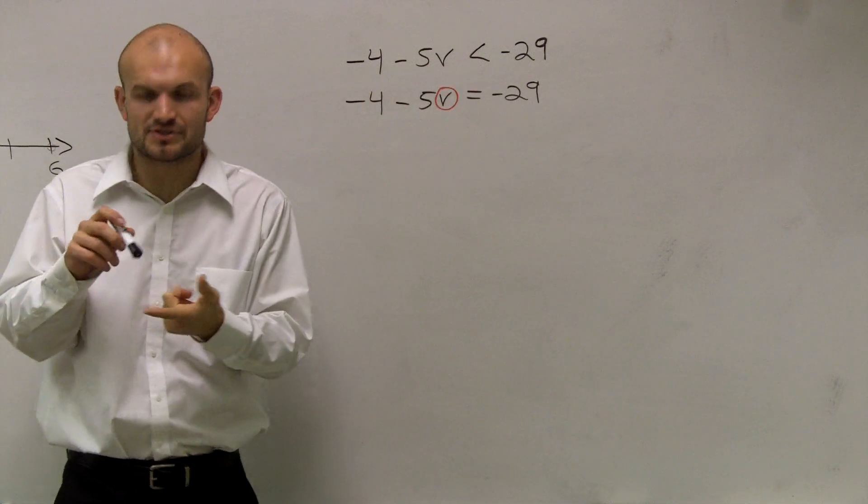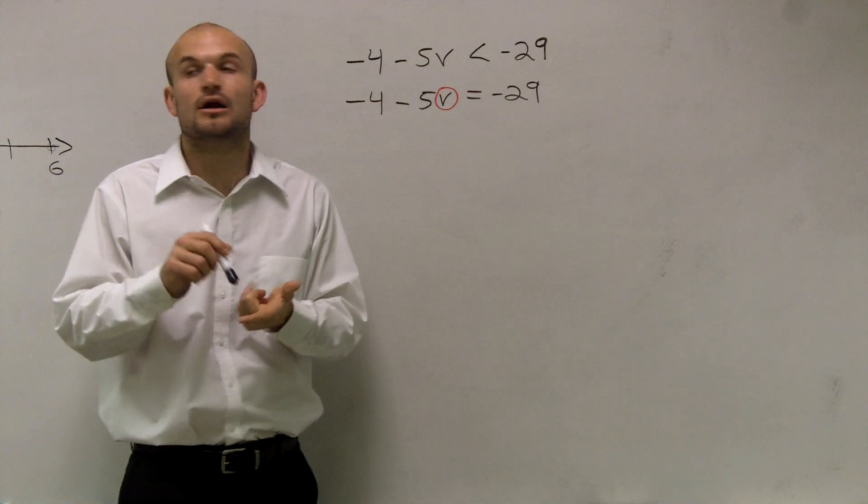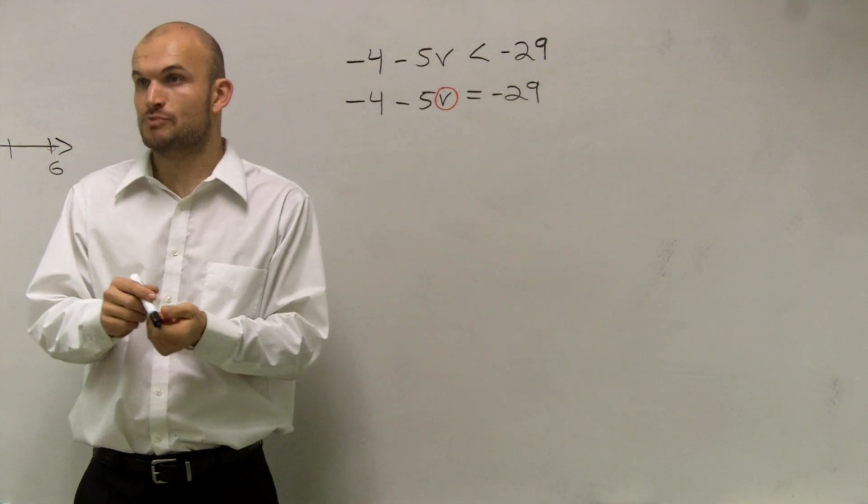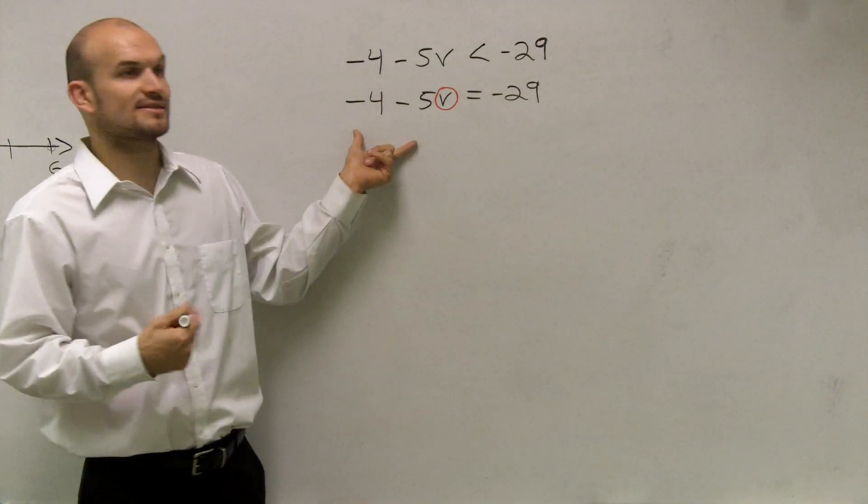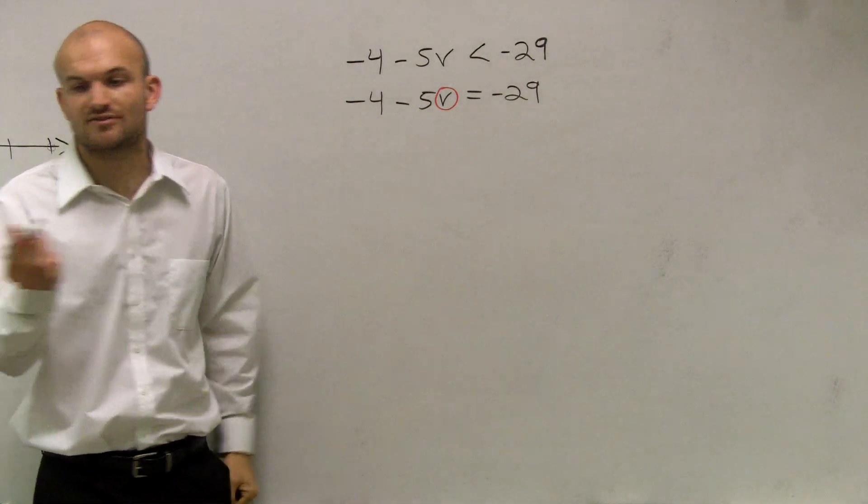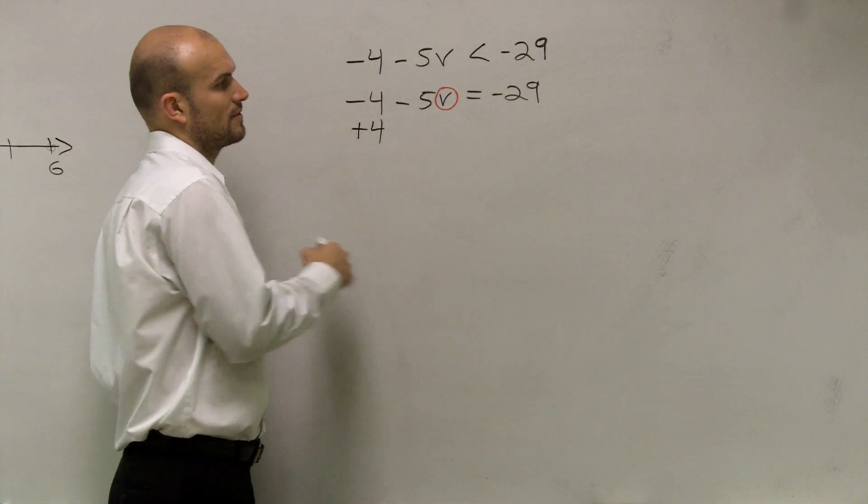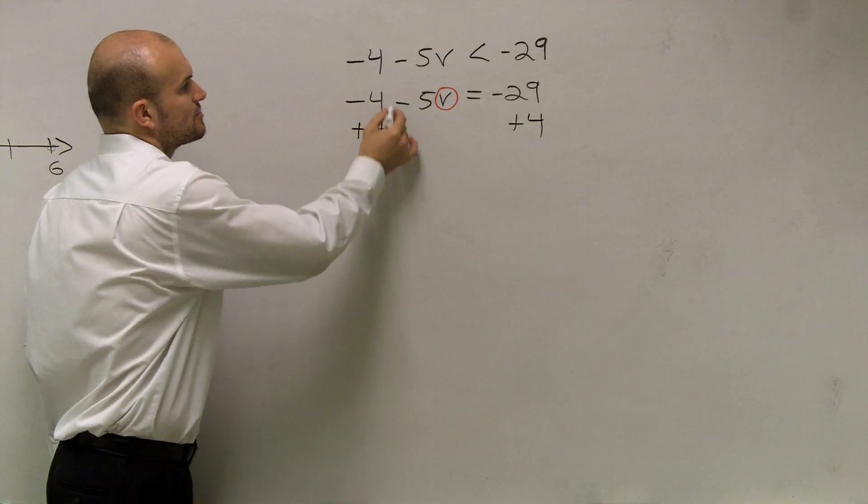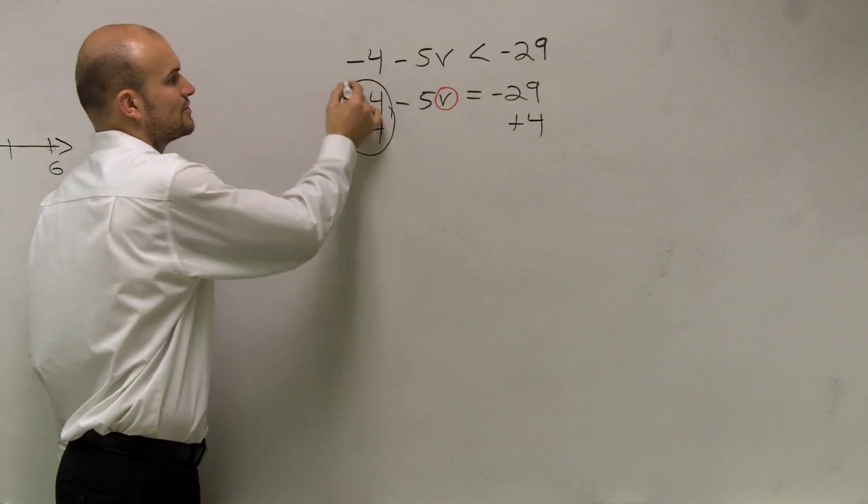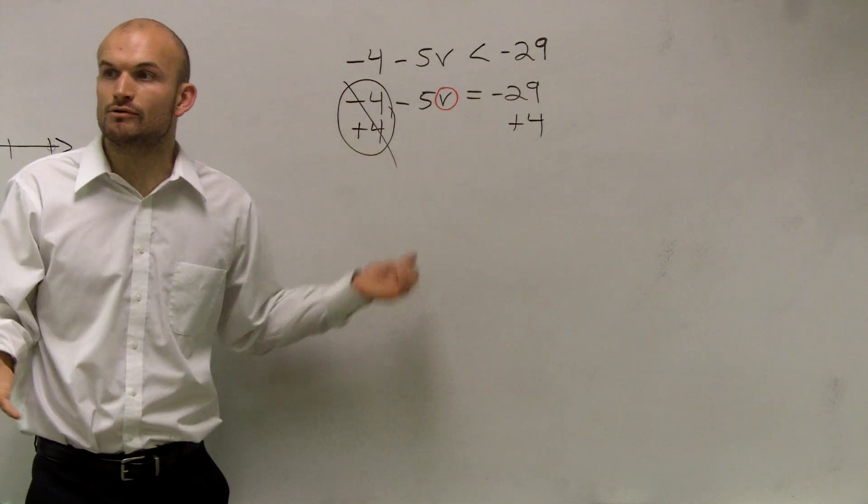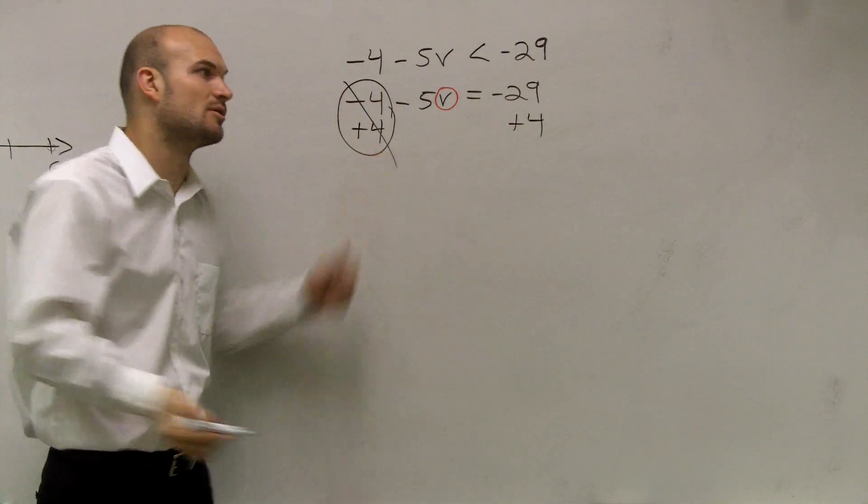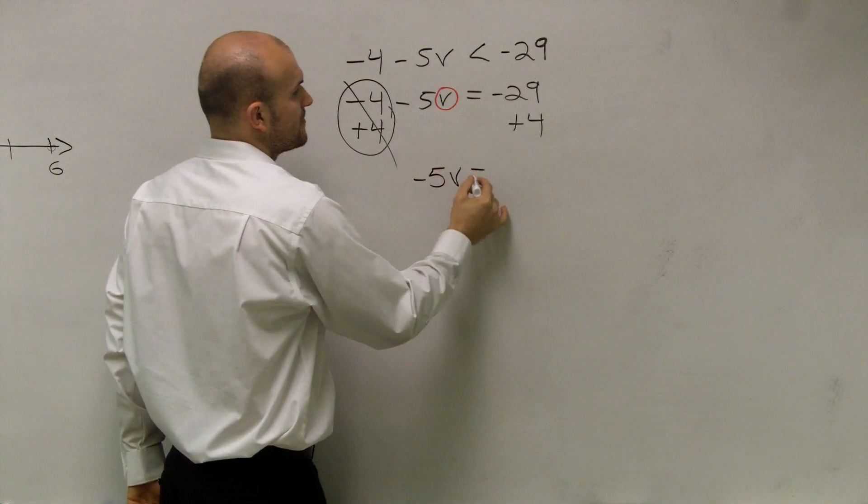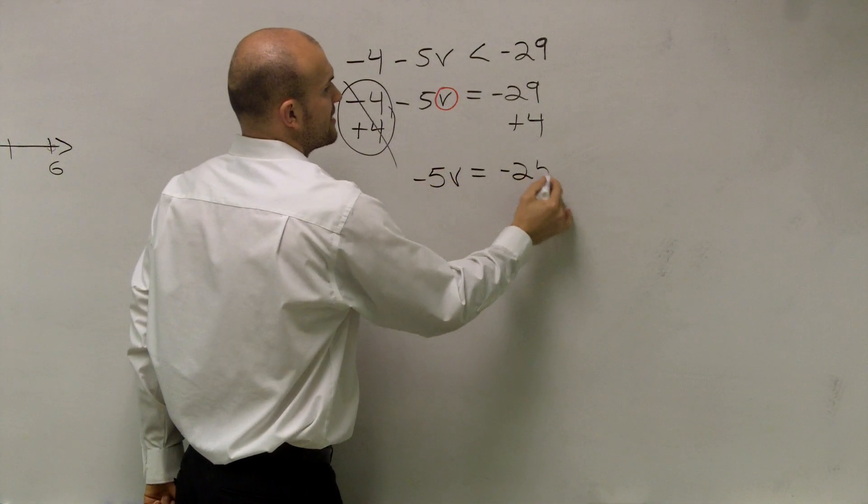So the next thing is, remember when we're doing our inverse operations, always do the inverse, always undo your addition and subtraction first. So I look at this and say, since I'm subtracting a 4, the opposite of that would be to add 4. The reason I know that is correct is subtract 4, add 4 is going to cancel out to 0. And that's exactly what we want on the side of our variable, to eliminate that number. Then I'm left with negative 5v equals negative 25.